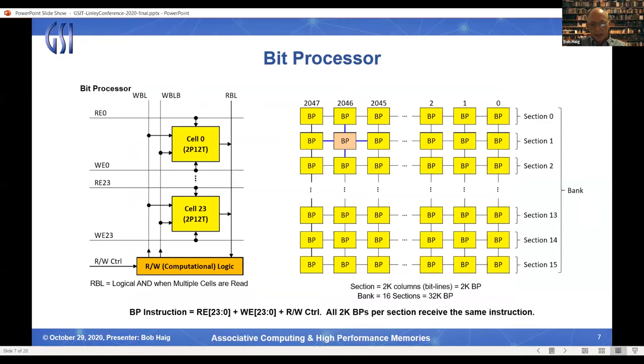As illustrated on the left, the bit processor comprises 24 dual-port 12T memory cells plus some additional combinatorial logic. You can think of the memory cells as bit processor registers. If multiple memory cells are read simultaneously, the result on the read bit line is the logical AND of the memory cell data. The bit processors are organized into sections, 2,000 per section. You can think of each section as a 2K vector processor. All 2K bit processors in a section execute the same instruction on its respective data. The instruction comprises the read enable and write enable signals that control memory cell access, plus various control signals performing other Boolean operations on the bit processor data in addition to the AND on the read bit line, and for storing data or computation results in the bit processor memory.